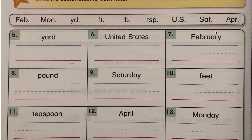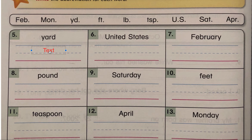I will help you do the first one. The first one says yard. Which abbreviation in this box means yard? That's right, the one with Y — so you can write it in the box. The abbreviation for yard is YD. Number six: what is the abbreviation for United States? When you find it, write it here on the lines.